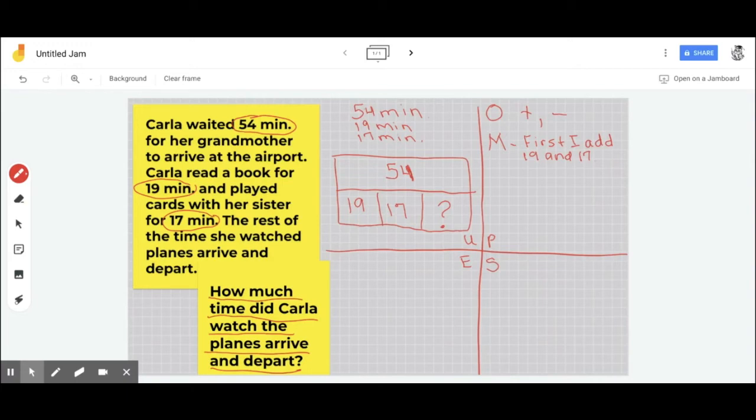Then, next, I subtract that from 54. And then, I'm going to write down that I'm going to try to find a sum and a difference.